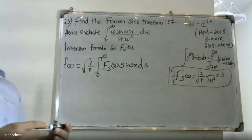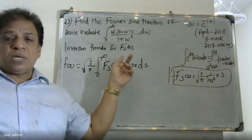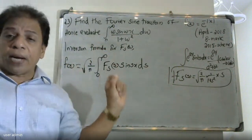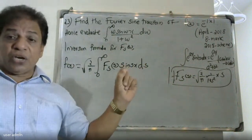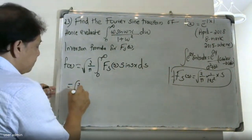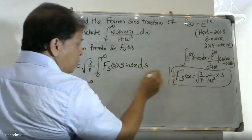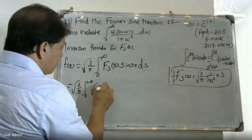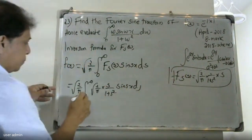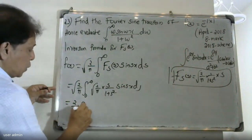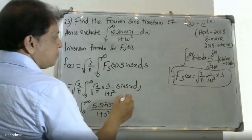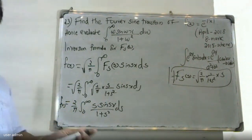Using the inversion formula: f(x) = root of 2 by pi, integral from 0 to infinity of F_s(s) into sine(sx) ds. Substituting the value of F_s(s) = root of 2 by pi into s by (1 plus s squared), we get: f(x) = 2 by pi, integral from 0 to infinity of s sine(sx) by (1 plus s squared) ds.